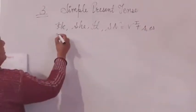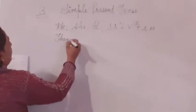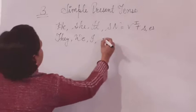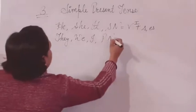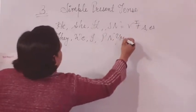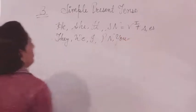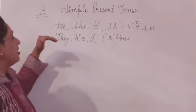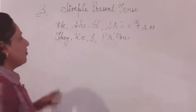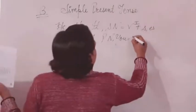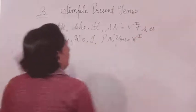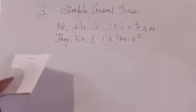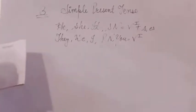If your subject is plural — they, we, I, you, or a plural noun — we will use only the verb with first form. Let's understand this topic through the example sentences.